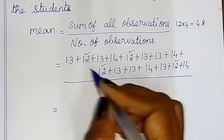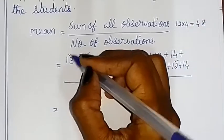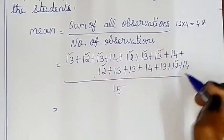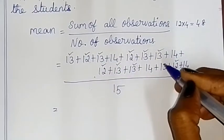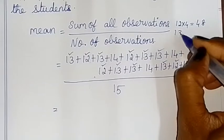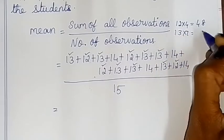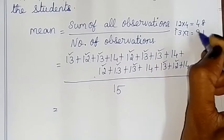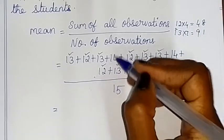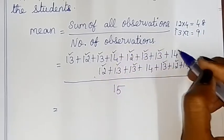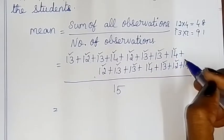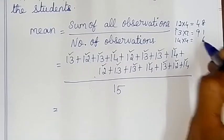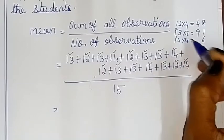Multiplication is repeated addition. So 12 times 4 is 48. The number 13 appears 1, 2, 3, 4, 5, 6, 7 times — so 13 into 7: 7 times 3 is 21, 7 times 1 is 7, giving 91. The number 14 appears 1, 2, 3, 4 times — so 14 into 4: 4 times 4 is 16, 4 times 1 is 4, giving 56.